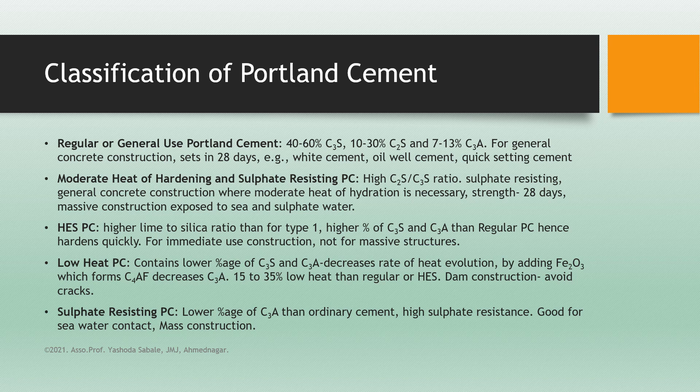Type 2 is moderate heat of hardening and sulfate resisting Portland cement. It has a high C2S to C3S ratio and is sulfate resisting. It is used for general concrete construction where moderate heat of hydration is necessary. Strength is gained in 28 days. This cement is used in massive construction exposed to sea and sulfate water.